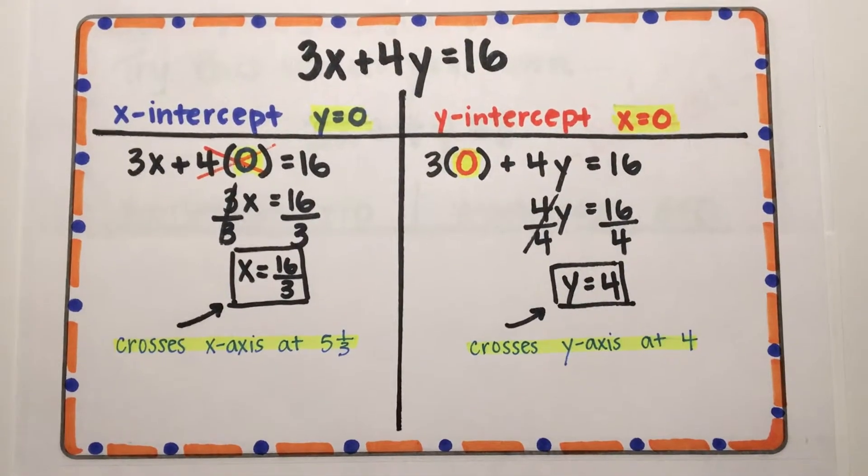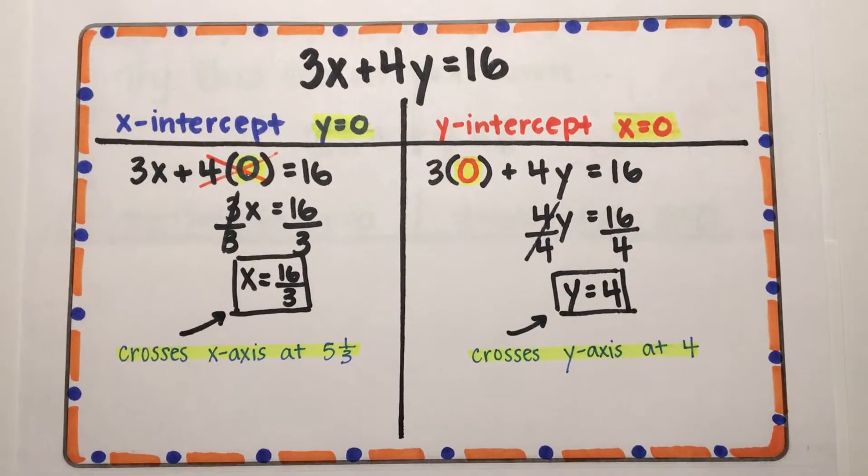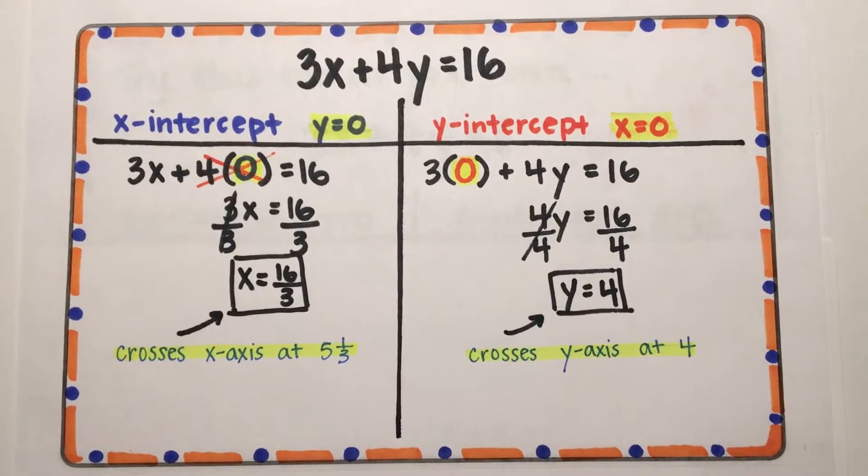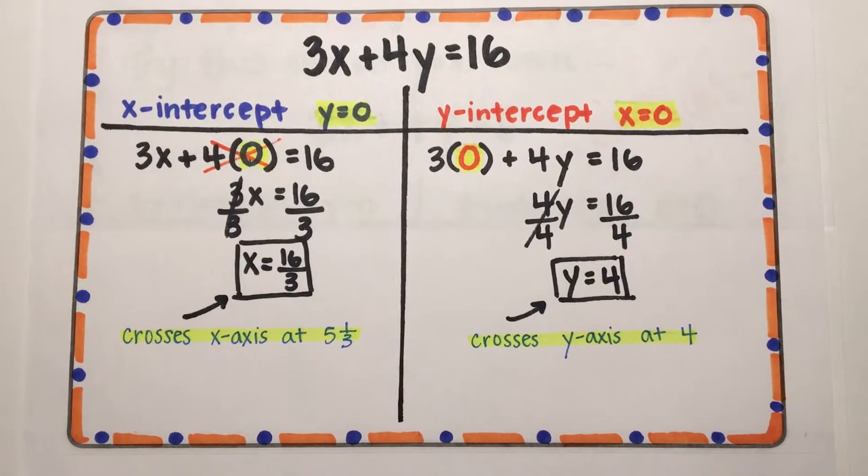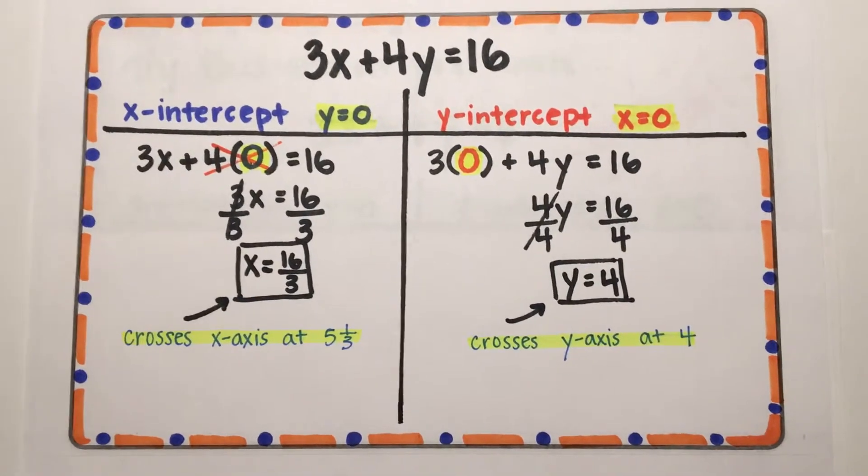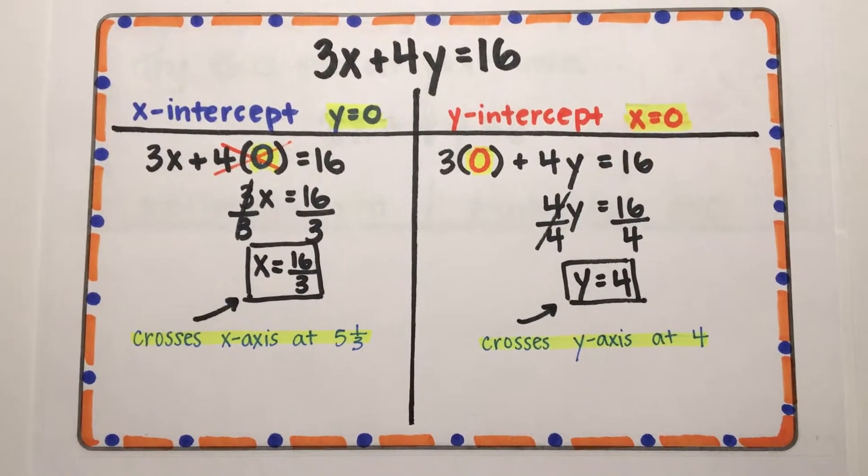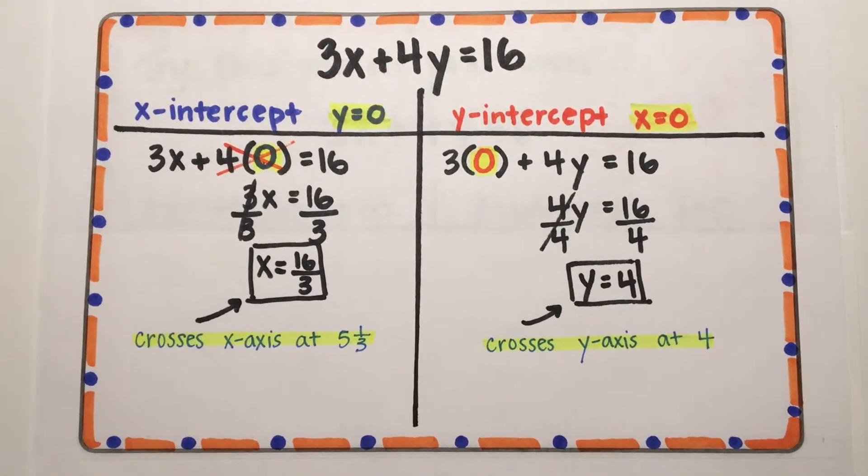To calculate the y-intercept, replace x with 0. 0 times 3 cancels out. Then solve for y by dividing by 4 on both sides. 16 divided by 4 simplifies to 4. Since y equals 4, this means the graph crosses the y-axis at 4.